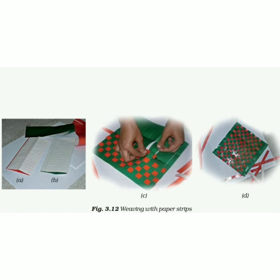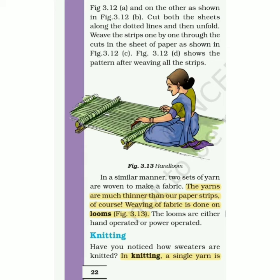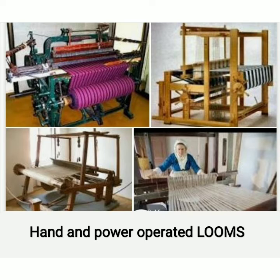Let's try to weave some paper strips — this is a very interesting activity you can perform at home. On page 22, figure 3.13 shows a hand loom. In a similar manner, two sets of yarn are woven to make a fabric, though yarns are much thinner than paper strips. Weaving of fabric is done on looms, which are either hand operated or power operated. Both types are shown in the photographs — please check them properly.